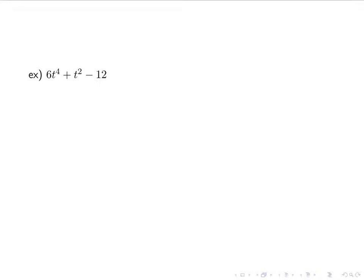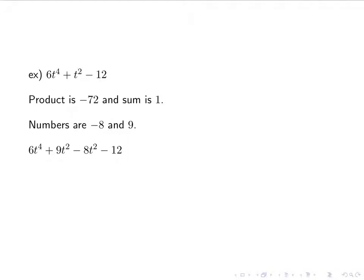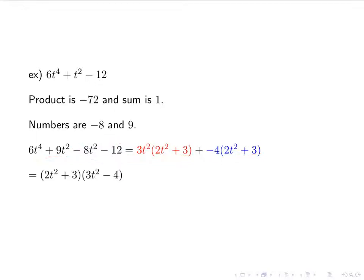Next: 6t to the fourth plus t squared minus 12. Product is negative 72, sum is 1. I need a positive and a negative number where the positive is larger and they differ by 1, giving negative 8 and 9. I split t squared into 9t squared minus 8t squared and factor by grouping: 3t squared from the first two terms, negative 4 from the last two. The new GCF is 2t squared plus 3, leaving 3t squared minus 4. Don't forget to FOIL it out to verify.